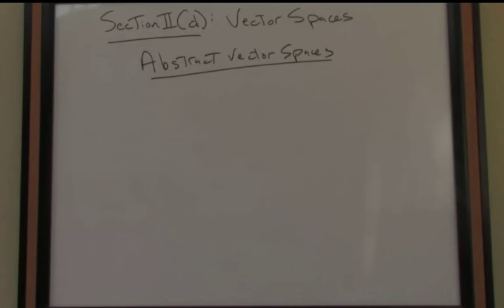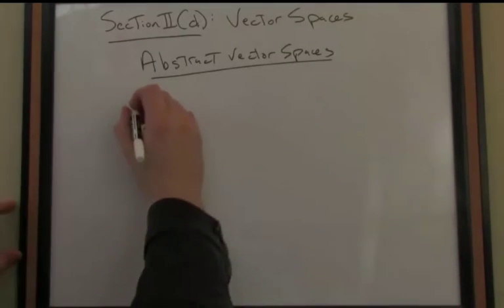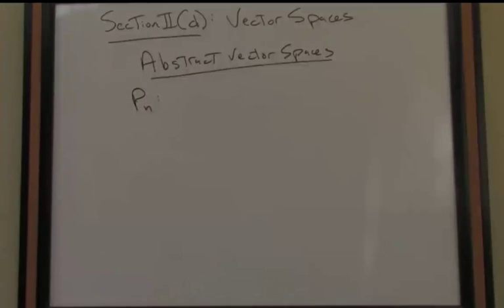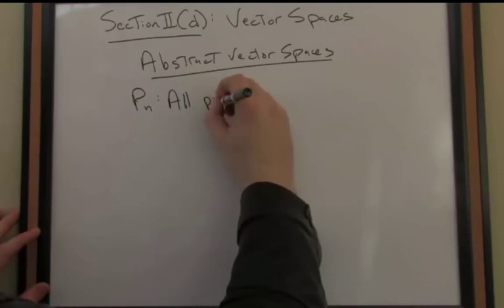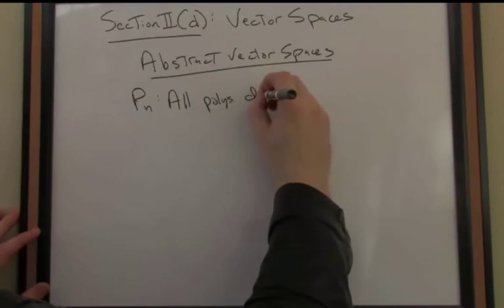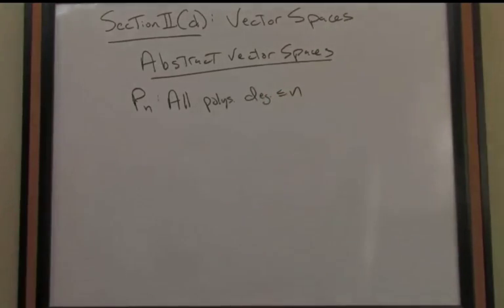So an example of an abstract vector space is something like the following. P sub n stands for the vector space of all polynomials of degree less than or equal to n. So this is all polynomials of degree less than or equal to n.